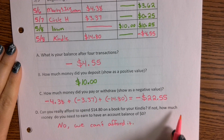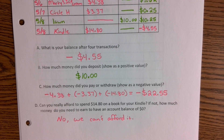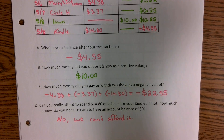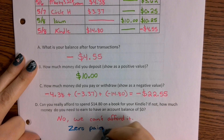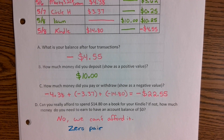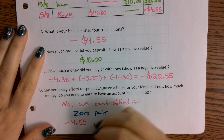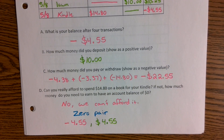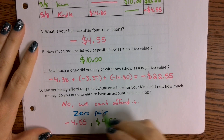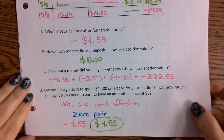If not, how much money do you need to earn to bring the account balance to zero? Think of zero pairs — in order to create a balance of zero you need a zero pair. Currently we have negative $4.55, so we need to earn a positive $4.55 to create that zero amount. It balances each other out — that's how you create that zero pair.